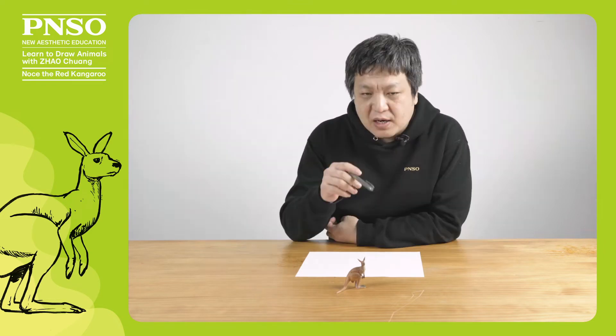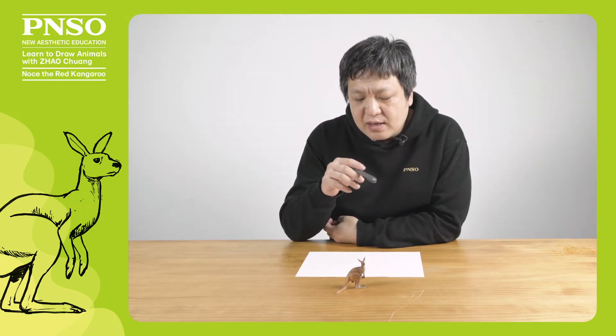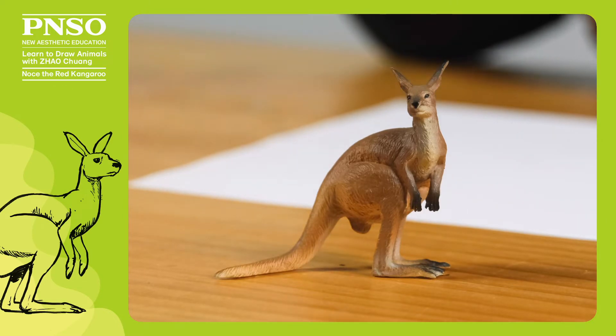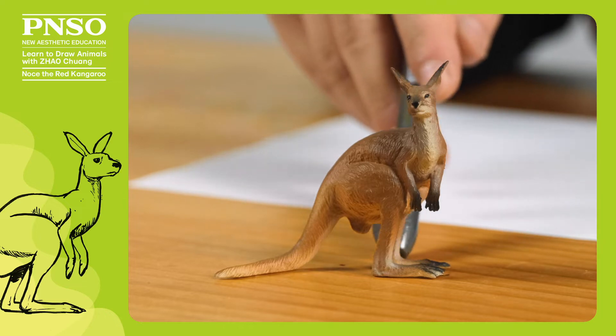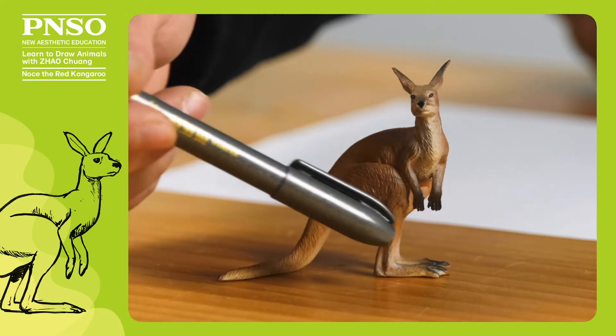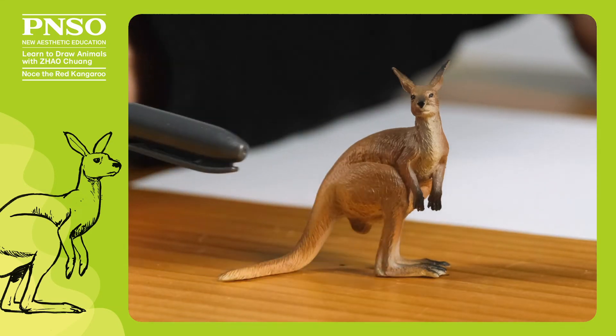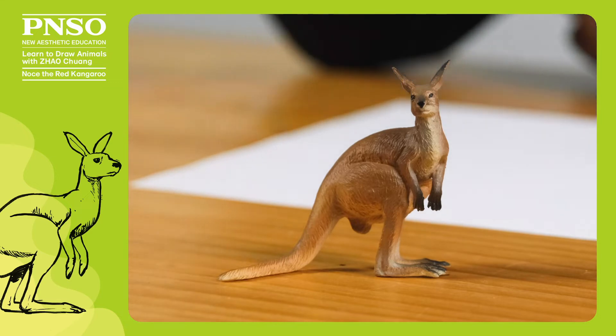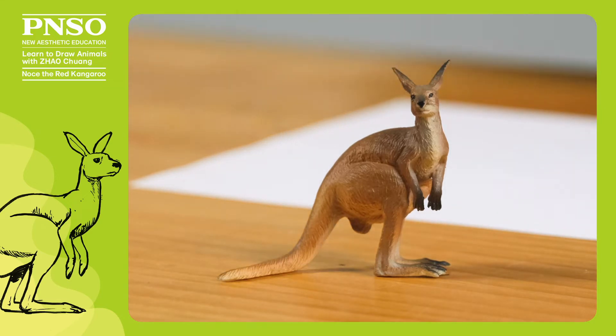When drawing the kangaroo, we can draw it sitting as this model shows, which could present many features of it. Such as its legs. This posture could show its entire legs, including the position of the joints and how the proportion of each bone looks like, and its tail could play a role as a stool. In addition, when sitting, the kangaroo's head would raise up, which shows the real length of its neck.